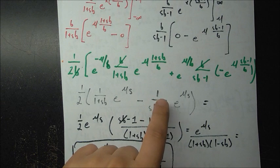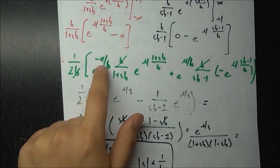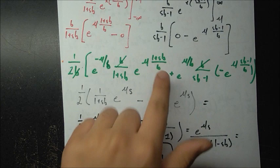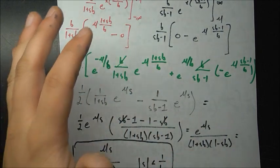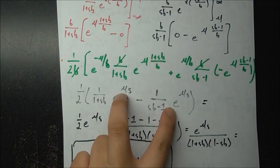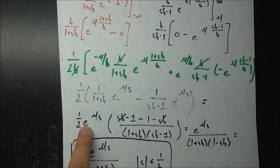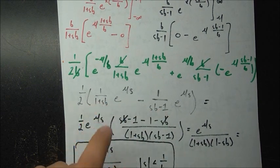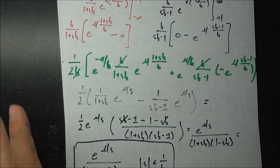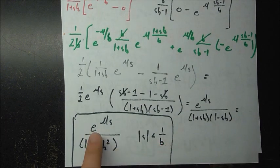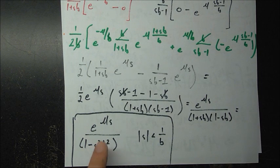After pushing e to the minus mu over b and e to the mu over b back into the terms, after simplification they each become just e to the mu·s. Pulling that common factor out and simplifying the remaining fraction, we get the MGF as e to the mu·s over 1 minus s squared·b squared.